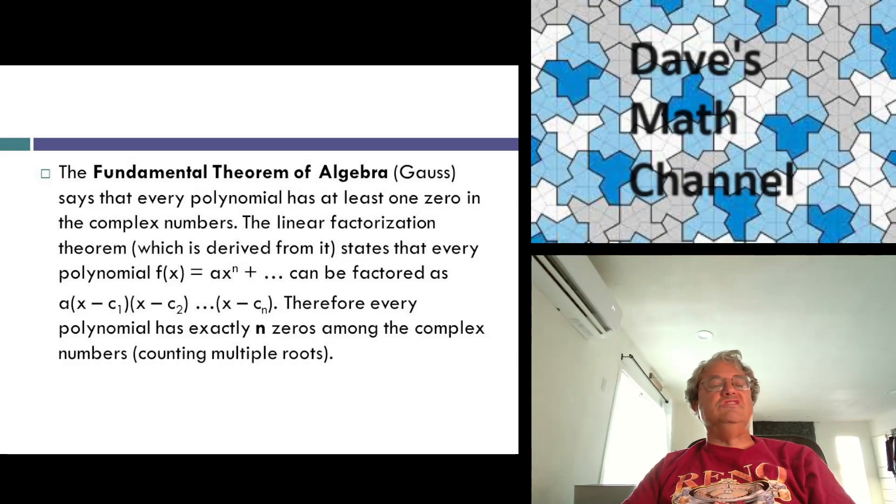And you might repeat some of these factors, but basically what this says is that every polynomial factors completely over the complex numbers. That means that every polynomial of degree n has exactly n roots, n complex roots, maybe repeated. Amazing fact, I think.